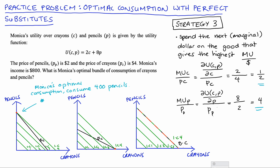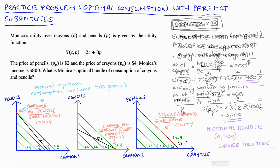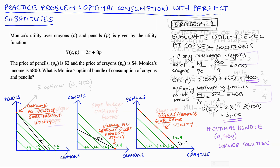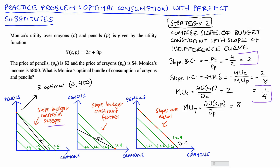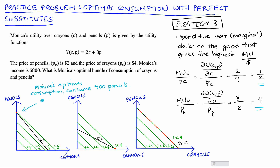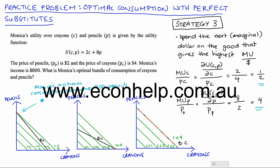So that's three ways to look at perfect substitutes and solve for the optimal bundle: calculate utility at the corner solutions and see which is larger; compare the slopes of indifference curves and budget constraint; or compare the marginal utility per dollar spent on each good. I hope that helped — reach out if you have any trouble. Thank you for watching. You can visit my website at www.econhelp.com.au. Hope you're all doing well.